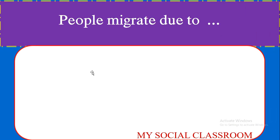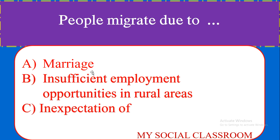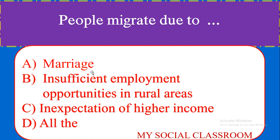People migrate due to: Marriage, Insufficient employment opportunities in rural areas, Expectation of higher income, All the above. Correct answer: All the above. All three options are correct.